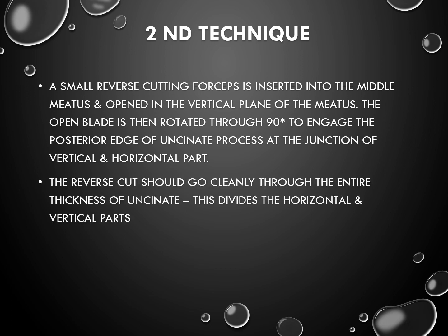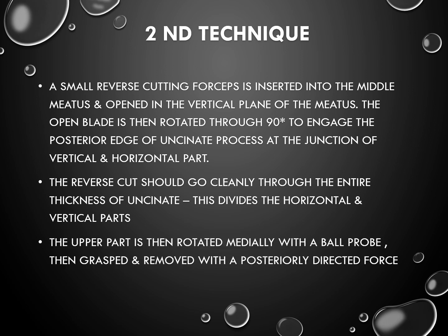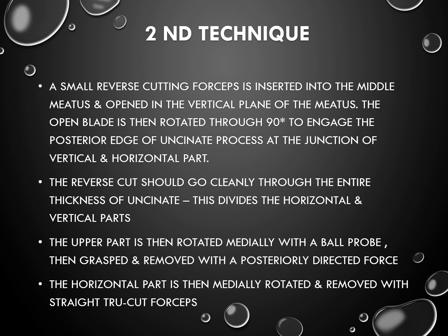The reverse cut should go cleanly through the entire thickness of the uncinate process, thus dividing the horizontal and vertical parts. The upper part is then rotated medially with a ball probe, then grasped and removed with a posteriorly directed force. The horizontal part is then medially rotated and removed with a straight through-cut force.